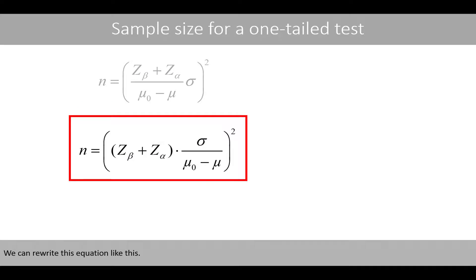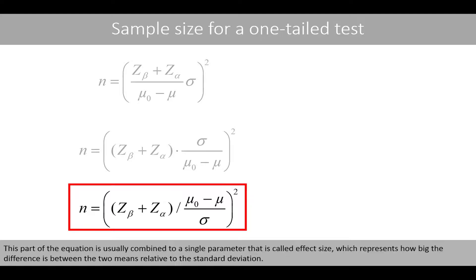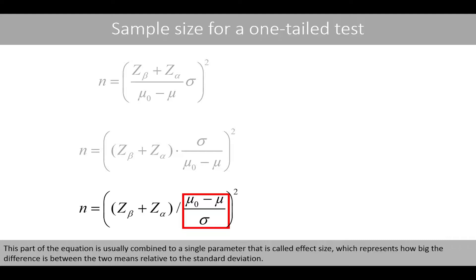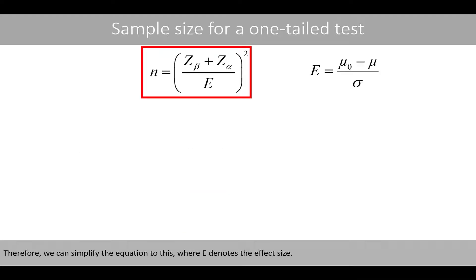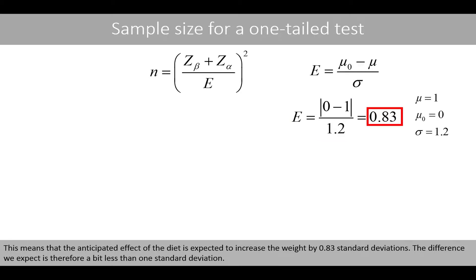We can rewrite this equation, and instead of multiplying by sigma over (mu_0 minus mu), we can divide by (mu_0 minus mu) over sigma. This part of the equation is usually combined into a single parameter called effect size, which represents how big the difference is between the two means relative to the standard deviation. We simplify the equation to this, where capital E denotes the effect size. If we include our previous values for the means and the standard deviation, we see that the effect size, which should always be positive, is 0.83. This means that the anticipated effect of the diet is expected to increase the weight by 0.83 standard deviations.